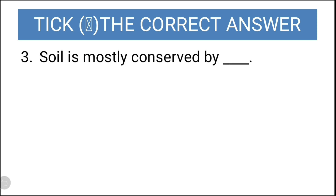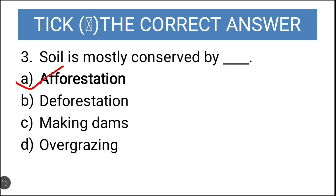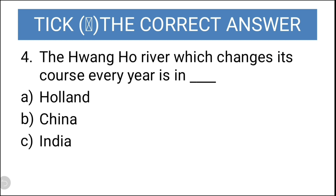Next question: soil is mostly conserved by — afforestation, deforestation, making dams, or overgrazing? The soil is conserved by afforestation. Fourth question: the Wangvo river which changes its course every year is in Holland, China, India, or Sri Lanka? The answer is China.